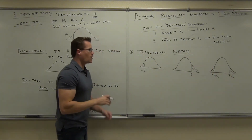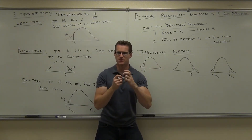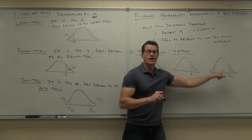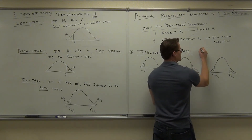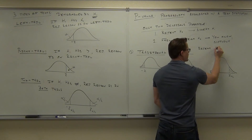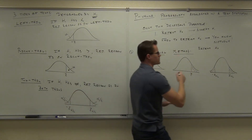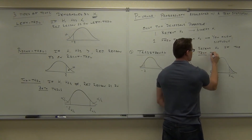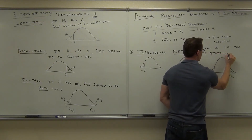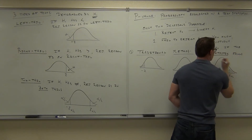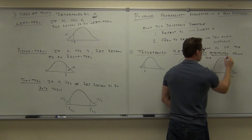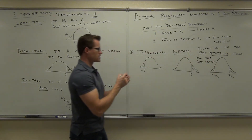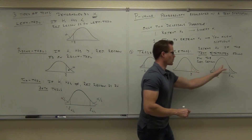Depending on your type of test, you'll have a negative critical value, a positive critical value, or two critical values. What the traditional method says is: you take your test statistic and see if it falls in your rejection region. If it does, you reject H₀. So you reject H₀ if the test statistic falls in the rejection region — either here, or here, or in one of those two spots, respectively.